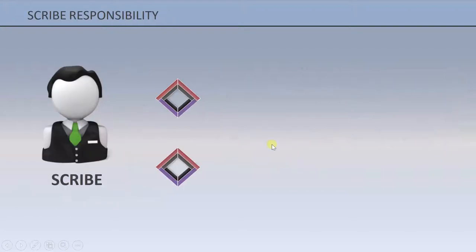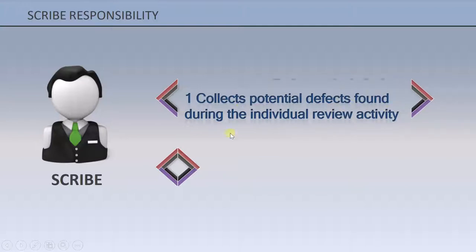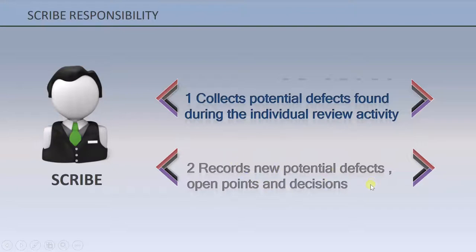The scribe is a person who collects potential defects found during the individual review activity. When the reviewer finds a defect, it is the scribe who collects those potential defects. The second responsibility of the scribe is to record new potential defects, open points, and decisions made during the review meeting. The scribe documents all this information and is one of the important people in the review process.